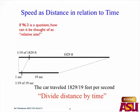If 96.3 is a quotient, how can it be thought of as relative size? That's what we're saying the result of division is — relative size. Talk to the person next to you. How can 96.3 be thought of as relative size? Because it's a quotient.